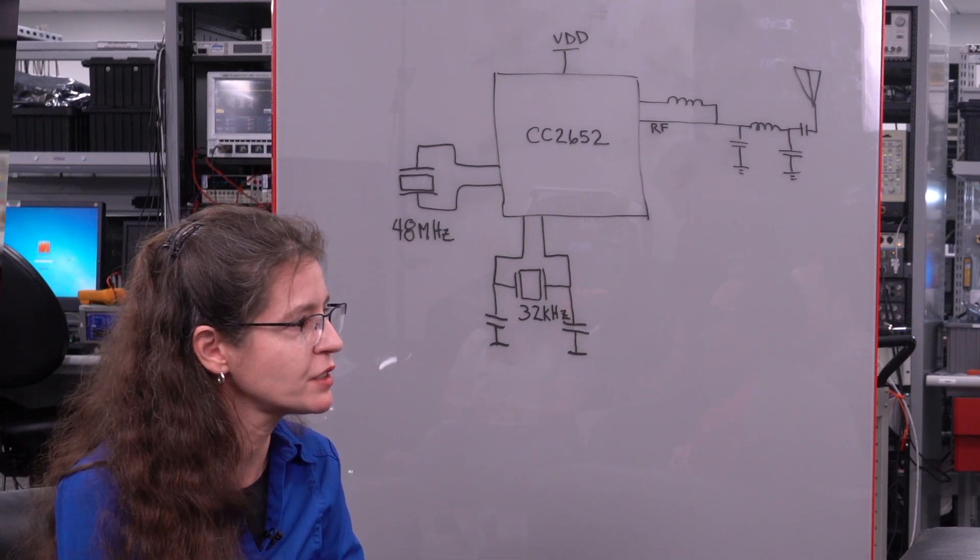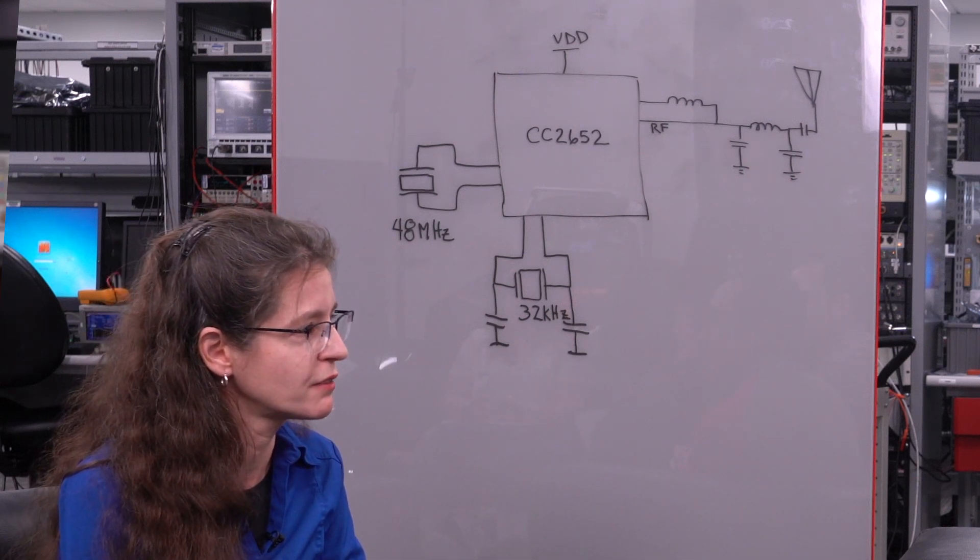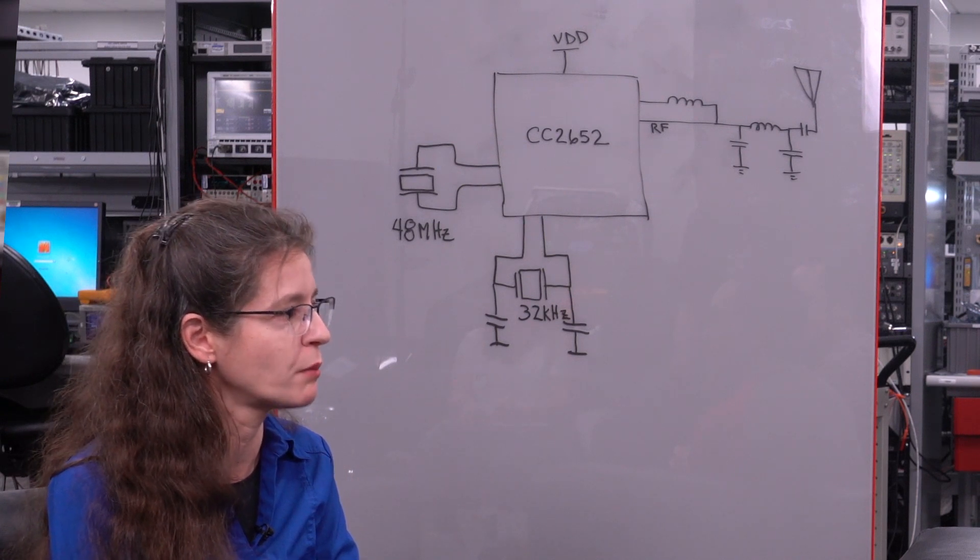With that integration, customers can expect an easier design and layout without the crystals, a smaller board size than if they used the device with two external crystals. What are some other benefits of BAW technology? I think it makes development time a lot faster — they don't have to order the crystals. If they run into any problems with crystals, which happens a lot, they've just avoided those. Applications engineers say that up to 30 percent of their time is spent helping customers with problems due to crystals.